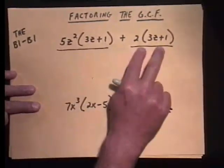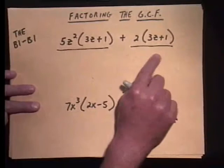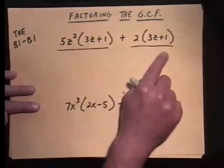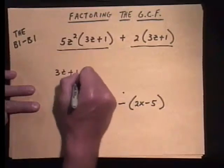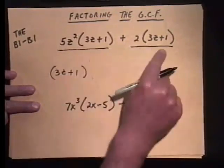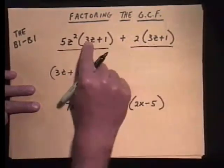So this is a binomial, and it doesn't take Einstein to see what they have in common. Gee, what does this have in common, I wonder? Yes. You can take out the 3z plus 1. Now, how many 3z plus 1s can I take out of each one of these?